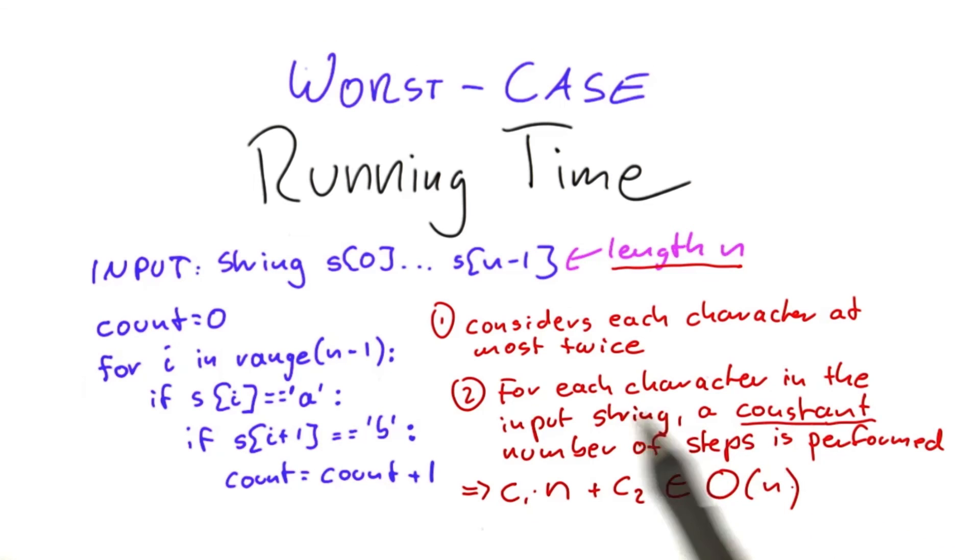So we do not need to care anymore about the detailed number of times this here is executed. We do not need to care about the details such as how often this line here is executed. We can just say that the running time of this algorithm is O of n, which would also be referred to as a linear algorithm.